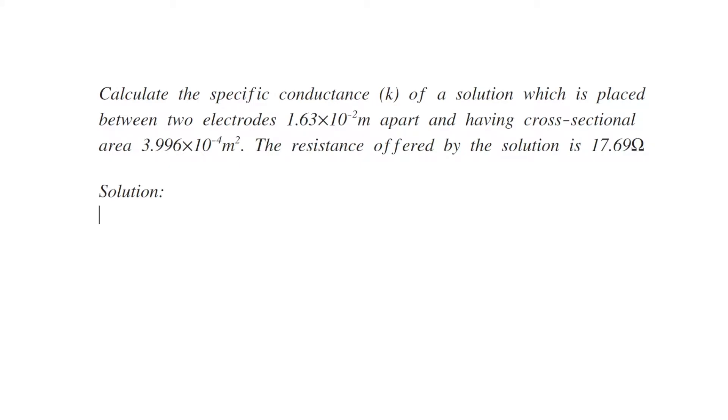Calculate the specific conductance k of a solution which is placed between two electrodes 1.63 into 10 to the power minus 2 meters apart and having cross sectional area 3.996 into 10 to the power minus 4 meter square. The resistance offered by the solution is 17.69 ohms.